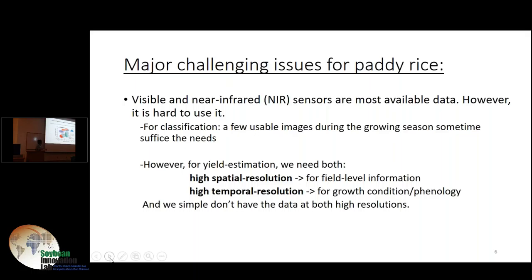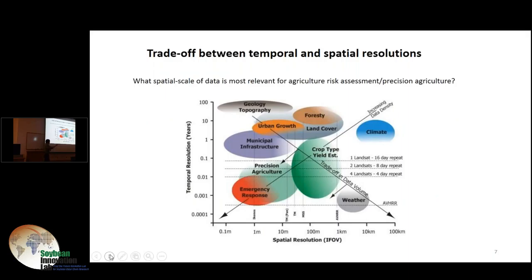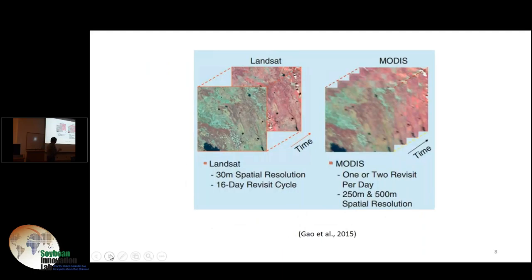This graph shows spatial resolution and temporal resolution, with different bubbles representing different applications. If we want to know crop type and yield estimation, we need to go below 100 meters and at least monthly temporal revisiting frequency. The approach we tested is using existing data sets but finding a way to fuse this data. Specifically, we have Landsat data at 30 meter resolution but every 16 day revisiting frequency.